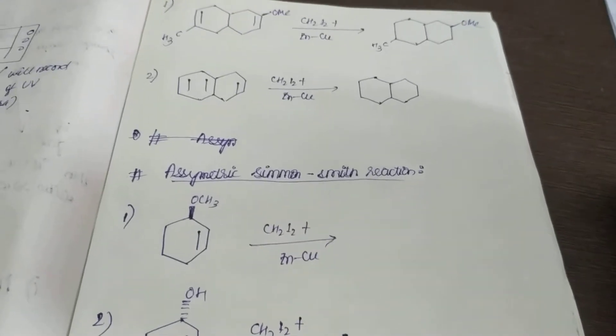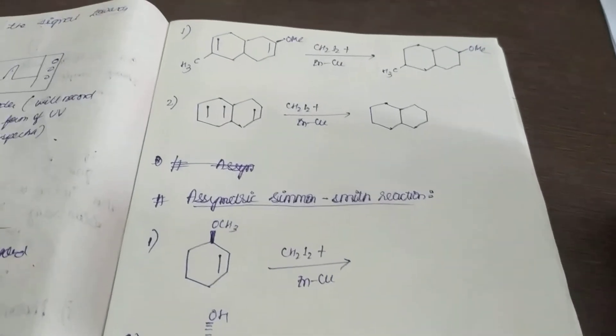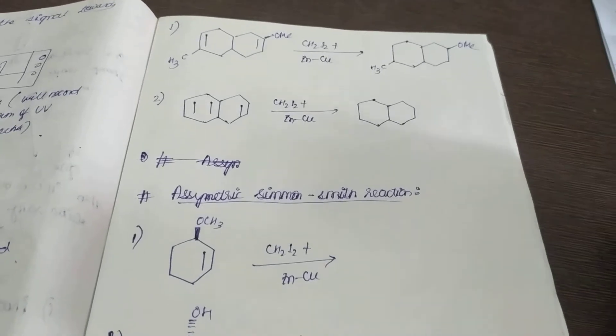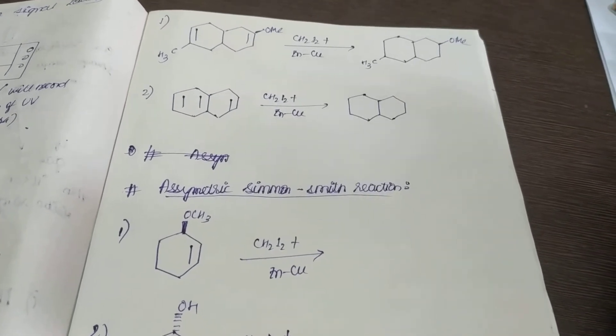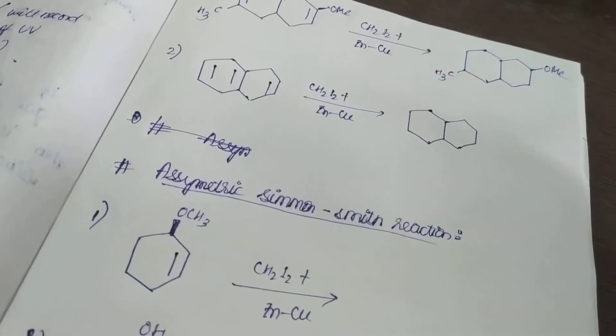So this is the second video for Simmons-Smith reaction, very important, so please go through the whole video. Yesterday I told you that where the double bond has more electron density, the attack will take place. That's why